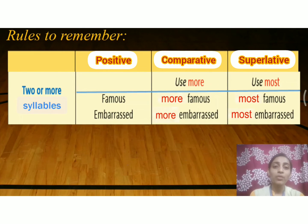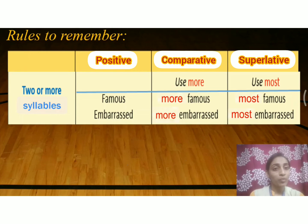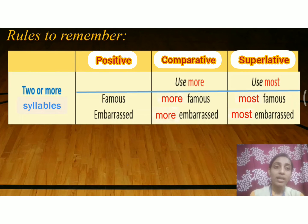Now let us talk about adjectives of two or more syllables. If an adjective has two or more syllables, we use 'more' in the comparative degree and 'most' in the superlative degree. For example, 'famous': the comparative form is 'more famous' and the superlative form is 'most famous'. Another example: 'embarrassed' — comparative is 'more embarrassed' and superlative is 'most embarrassed'.